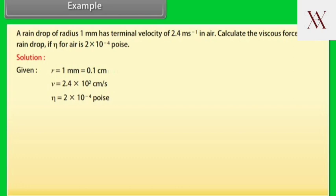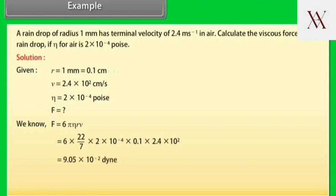We know that F equals 6 pi eta R V. Putting their respective values in the above equation, on calculating we get F equals 9.05 times 10 to the power minus 2 dyne, which equals 0.091 dyne. Hence the viscous force on the raindrop is 0.091 dyne.